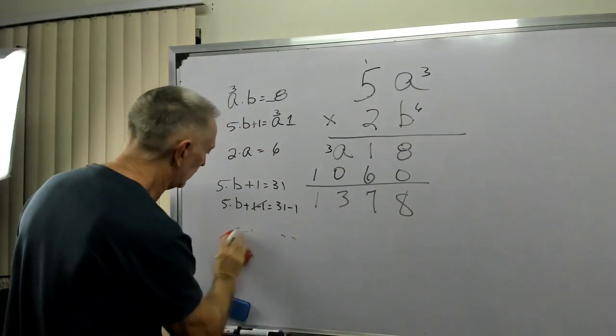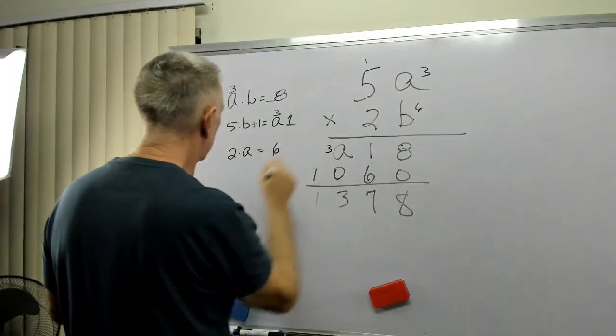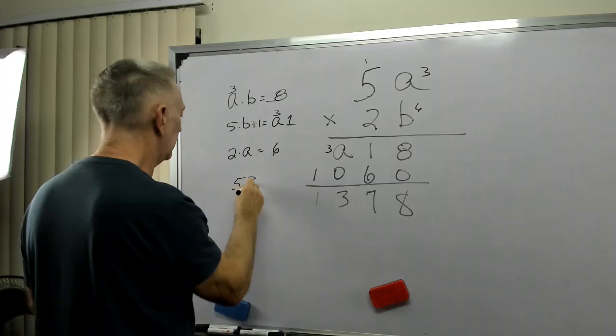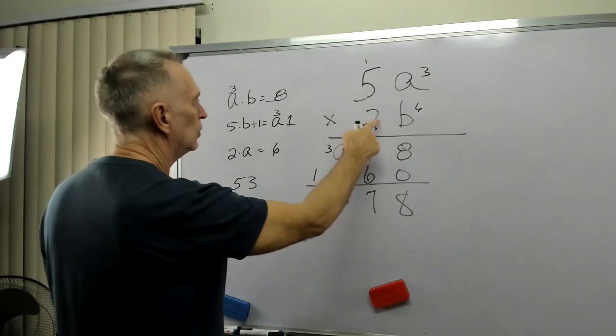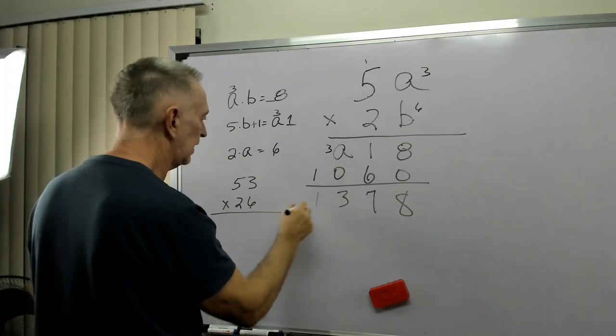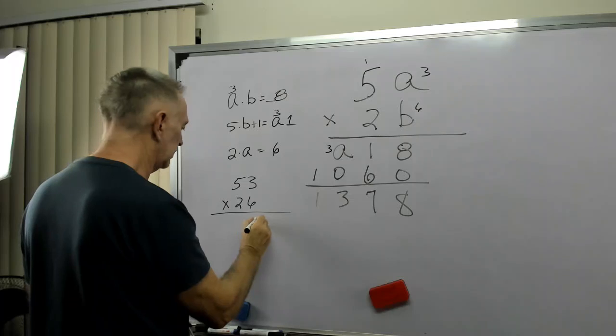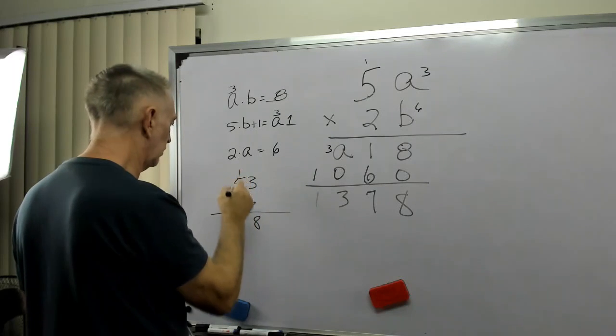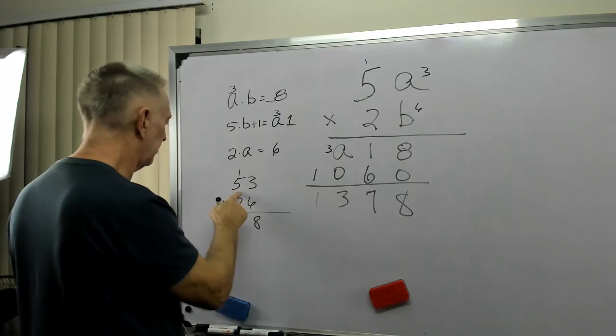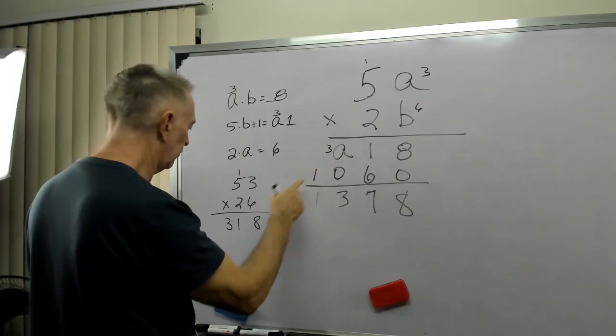Well, let's challenge ourselves here. So, we would have 53, 53 times 26, and we're thinking that equals 1,378. 6 times 3 is 18. So far, so good. 6 times 5 is 30, plus 1 is 31. So far, so good.